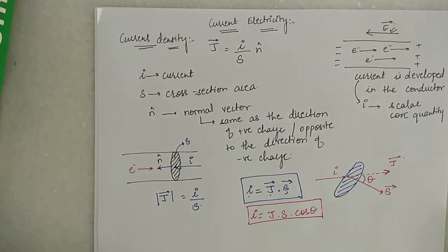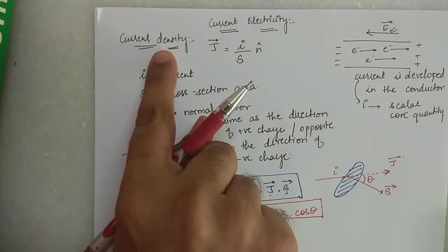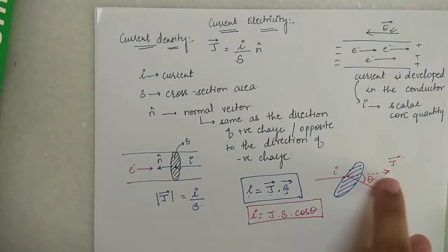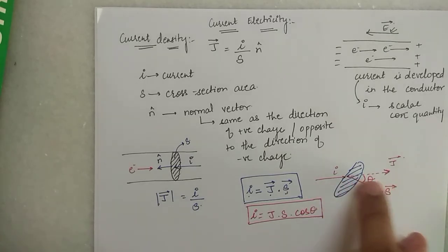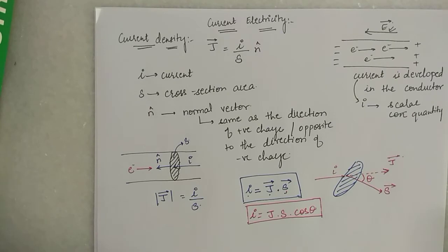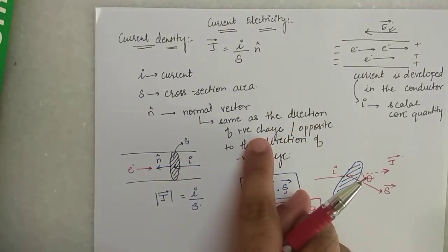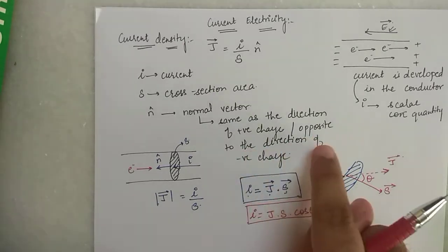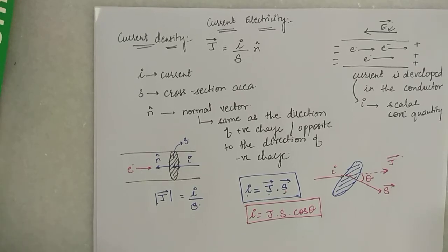You have to always remember that the current density vector J has the same direction as the current. And the direction of current is the same as the direction of positive charge, or opposite to the direction of motion of negative charge. I hope this is something that you have understood.